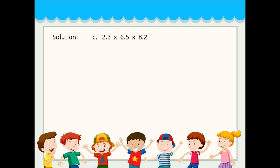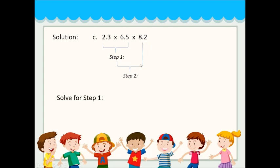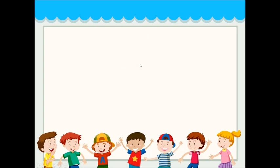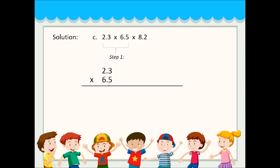Next, solution for letter C. We have 3 numbers to multiply: 2.3, 6.5, and 8.2. Step 1 is to multiply the first two numbers — 2.3 and 6.5. Step 2 is to multiply the answer from step 1 by 8.2. Let's solve step 1: 2.3 times 6.5.